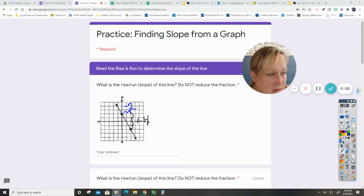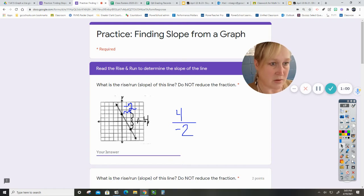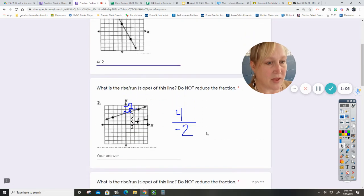So rise over run would be positive four over negative two. So you're going to type that answer in there, four over negative two, and that should be that problem.